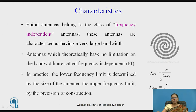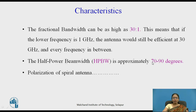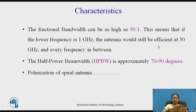The lower frequency is f_low = c / (2π r2), where c is the free space velocity of 3×10⁸ m/s, and the upper frequency is f_high = c / (2π r1). The fractional bandwidth for spiral antenna is as high as 30 to 1 — meaning if the lower frequency is 1 GHz, the antenna can efficiently be used up to 30 GHz with parameters remaining the same across 1 to 30 GHz. Half power beam width (HPBW) is approximately 70 to 90 degrees.